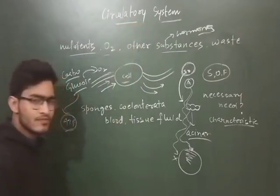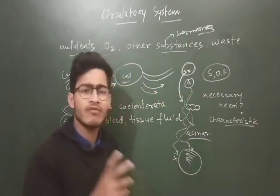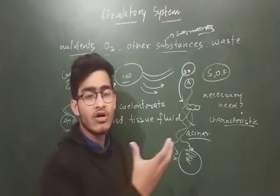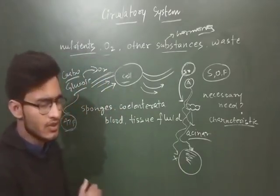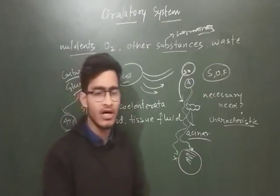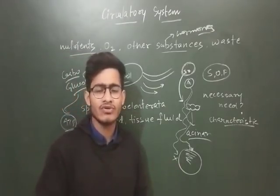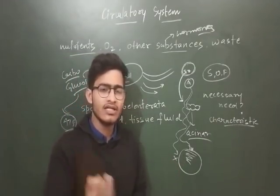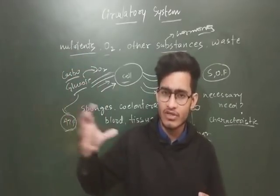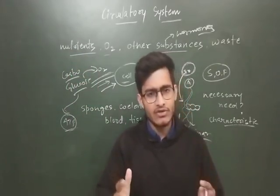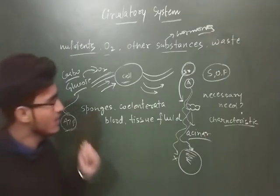So what is basically the circulatory system? It is a system formed upon different kinds of components — we will talk about arteries, veins, blood, tissue fluid, and lymph. All those things are part of the circulatory system. We will study the pumping mechanism — about the heart and all those things. In simple layman's language, it is basically the circulation of things: to a particular cell we need to provide some things, and we need to remove some unnecessary stuff from the cell as well.